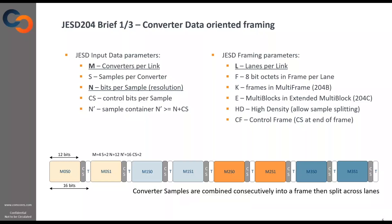There are different types of parameters described in the standard, coded by letters. These parameters give you a good overview of what the framing is going to be. I grouped them into two sets. The set on the left relates to the data. So you have physical converters — the underlined ones are physical aspects of the system — with M converters transmitting S samples, which is oversampling.